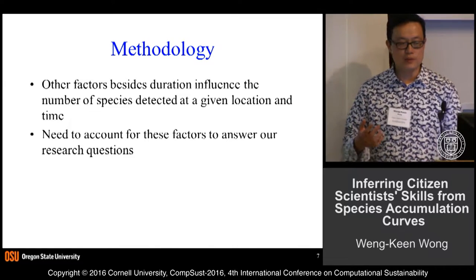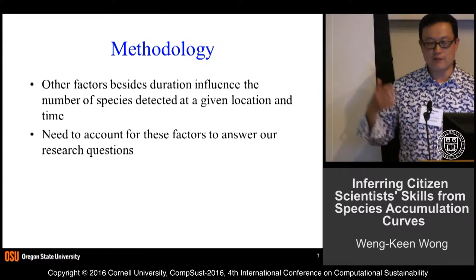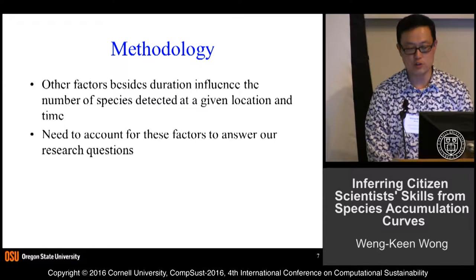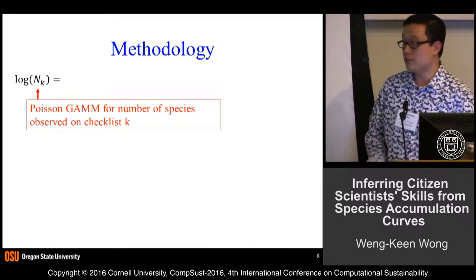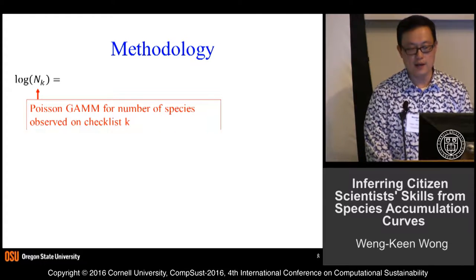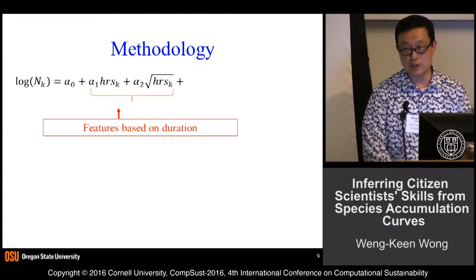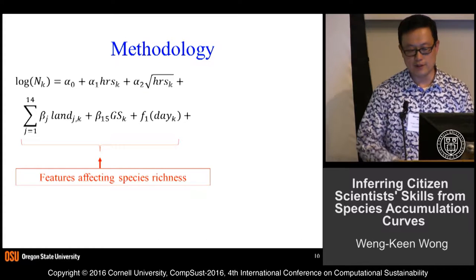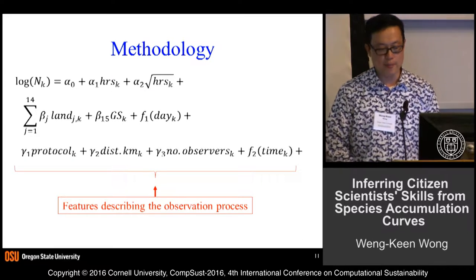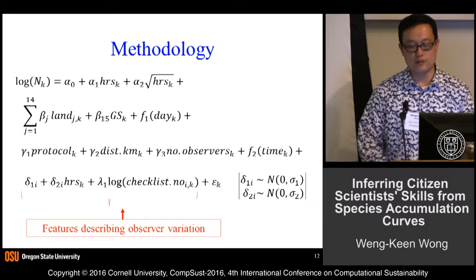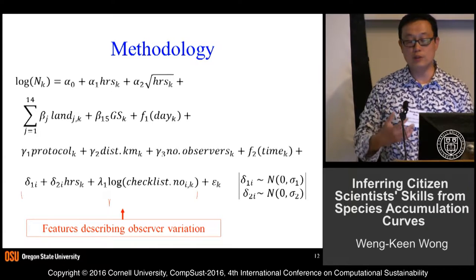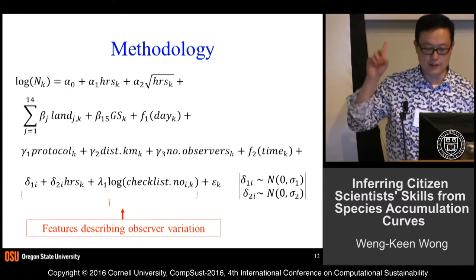To answer these questions, we need to account for other factors that influence the number of species detected at a given location and time. Our model is a Poisson generalized additive mixed model predicting the number of species on checklist K as a function of features based on duration, features affecting species richness such as habitat, features describing the observation process, and features describing the individual observer — including a cumulative checklist index with a coefficient lambda that I'll discuss shortly.